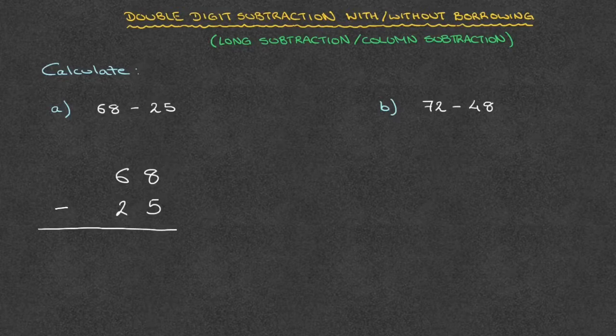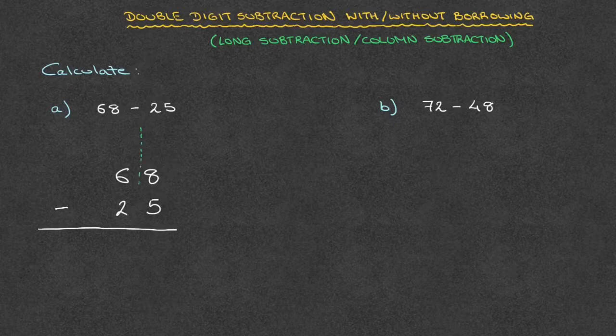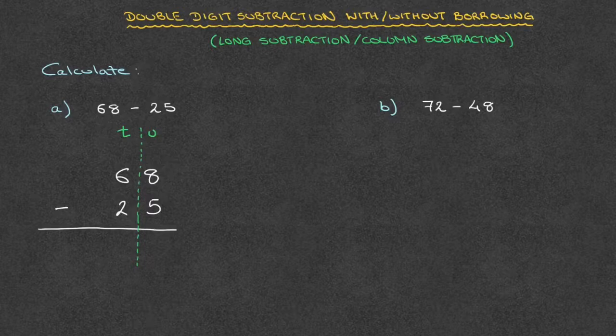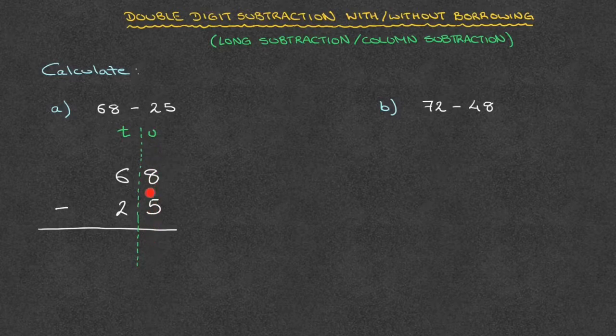Although we don't have to, I like to add a dotted line right between the units and the tens. I also like to write a U at the top of the units column, as well as a T at the top of the tens column. In doing this, I've made two columns: one for the units, which we could also call ones, as well as one for the tens. Now that that's done, we're ready to get started.